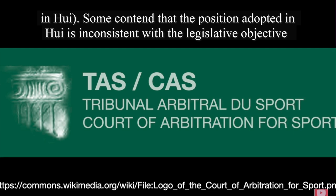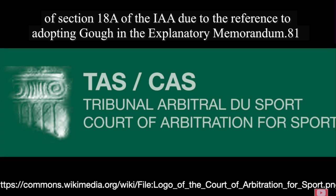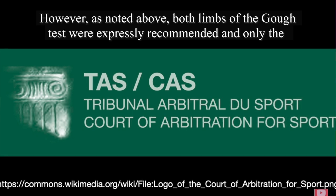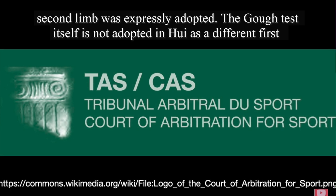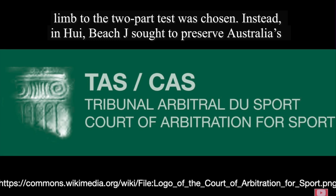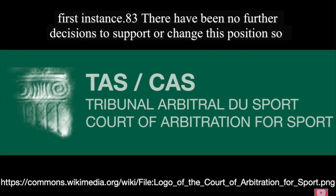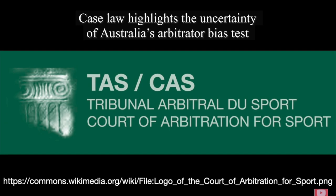Whilst statutory interpretation is part of the judiciary's role, this interpretation should not be made difficult by a provision's ambiguity, where it is easily remedied by the legislature. These two cases demonstrate what happens when the legislature fails to be clear and precise when enacting law. Case law reflects the two available outcomes under Section 18A. Prior to case law applying Section 18A of the IAA, there were two available outcomes to the application of Australia's arbitrator bias test: being that both limbs of the Gough test apply, as seen in Sino Dragon; or the other being that the first limb reflects Australia's common law and applies the fair-minded and informed observer perspective, as opposed to the courts, as seen in Hui. Some contend that the position adopted in Hui is inconsistent with the legislative objective of Section 18A of the IAA due to the reference to adopting Gough in the explanatory memorandum.